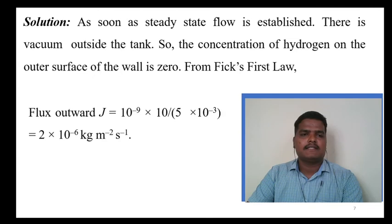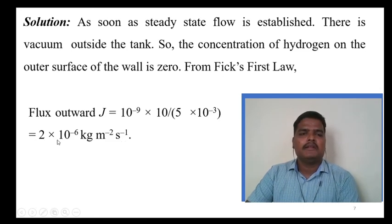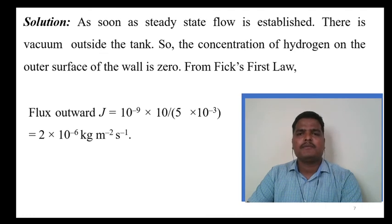If we use that formula, we get J equals d, that is 10^-9, times dC, the difference in concentration of hydrogen, that is 10 kg per meter cube, divided by dx, that is 5 millimeters, which is 5×10^-3. Finally we get 2×10^-6 kg per meter squared per second. That means 2 milligrams of hydrogen escapes per second per unit area. So even though it is closed from all sides, hydrogen atoms escape from the steel tank, and it is not a small amount.